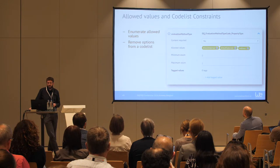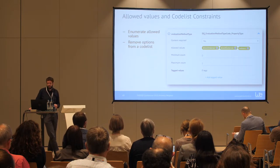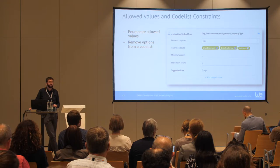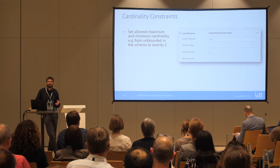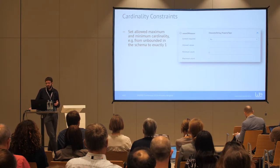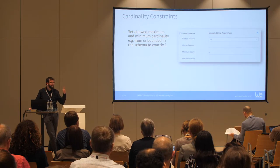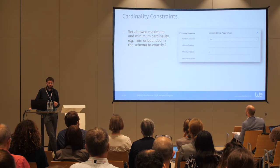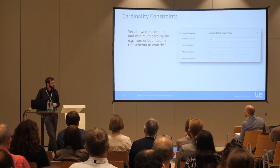It's also possible to define allowed values for any field. If there is no constraint before, it's basically a free text string and you can set some explicitly allowed values. If there is already a code list for a property — like the evaluation method type code — you can remove options by clicking the minus button, so that particular value will not be allowed anymore. Another typical constraint is defining how often you expect an element to occur — setting minimum and maximum counts, or even setting a count of zero to forbid the element entirely in that profile.